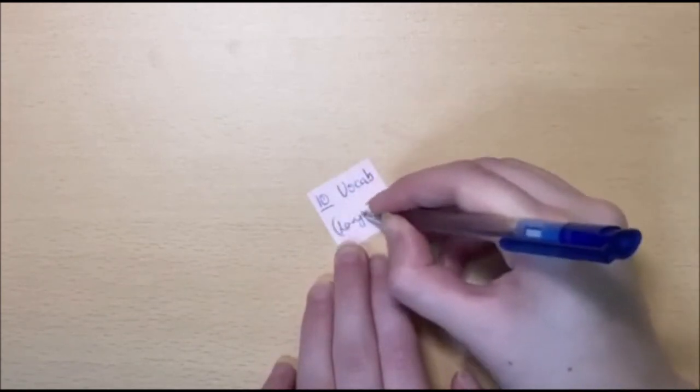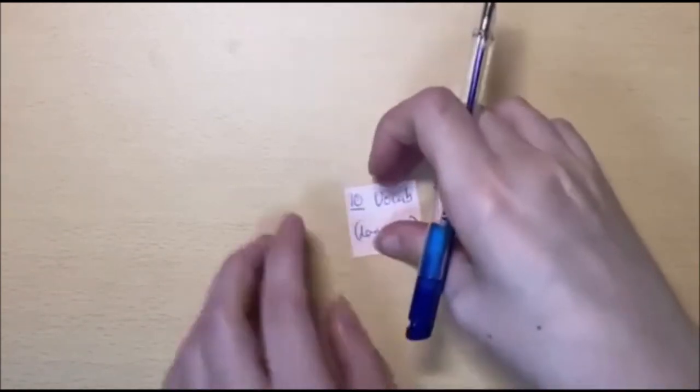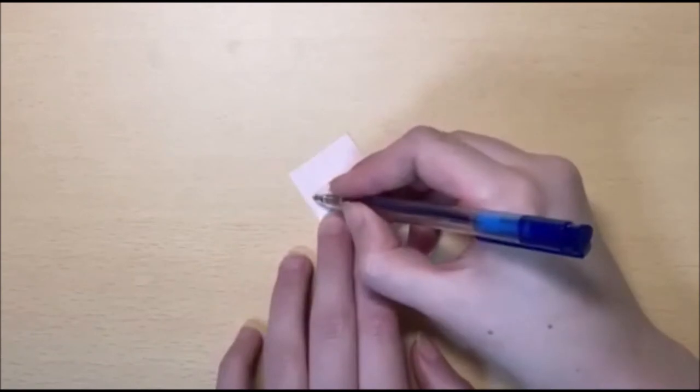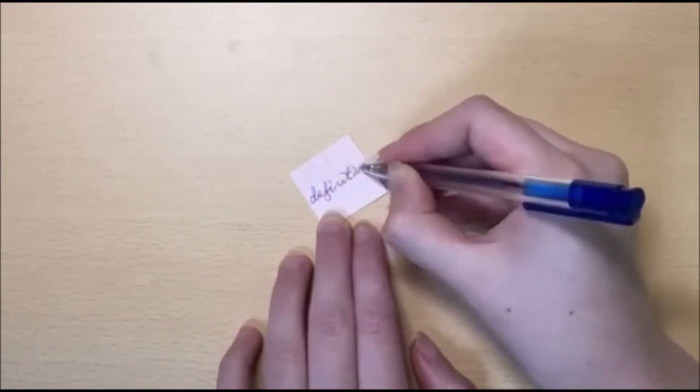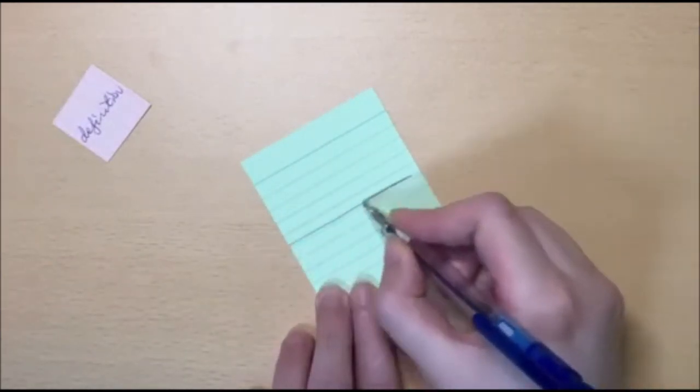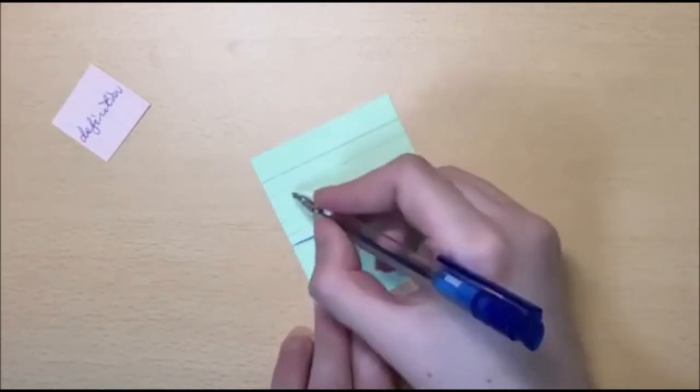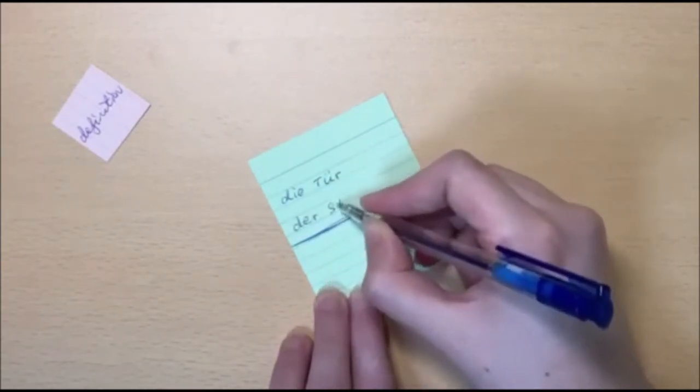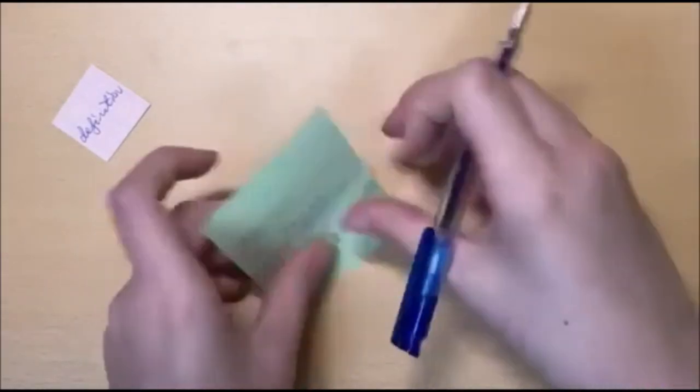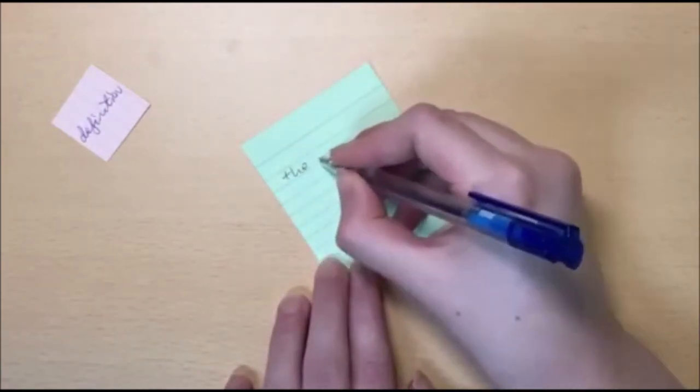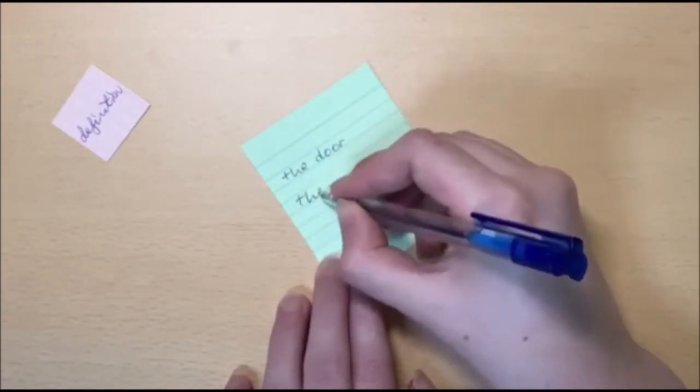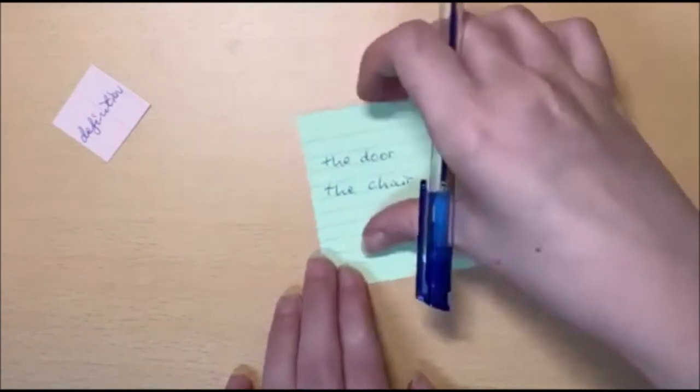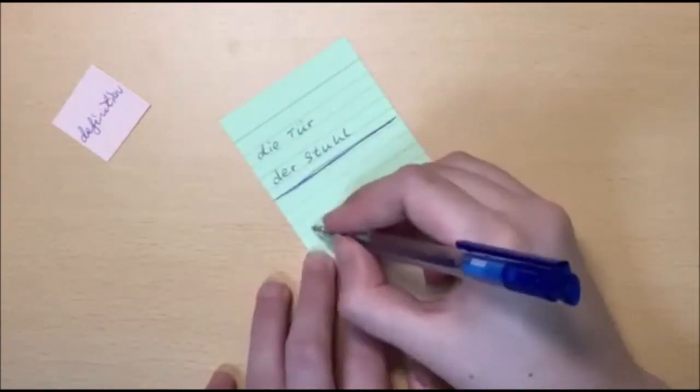And finally, use number ten of flashcards is for vocab. This is particularly important for language learners, and there are two different ways that I'm going to show you how you can use flashcards to learn new vocab. The first use is similar to the original term and definition. You give the word in your foreign language, in this case German, and then you give it your native language equivalent on the back of the flashcard. For example, die Tür means the door.